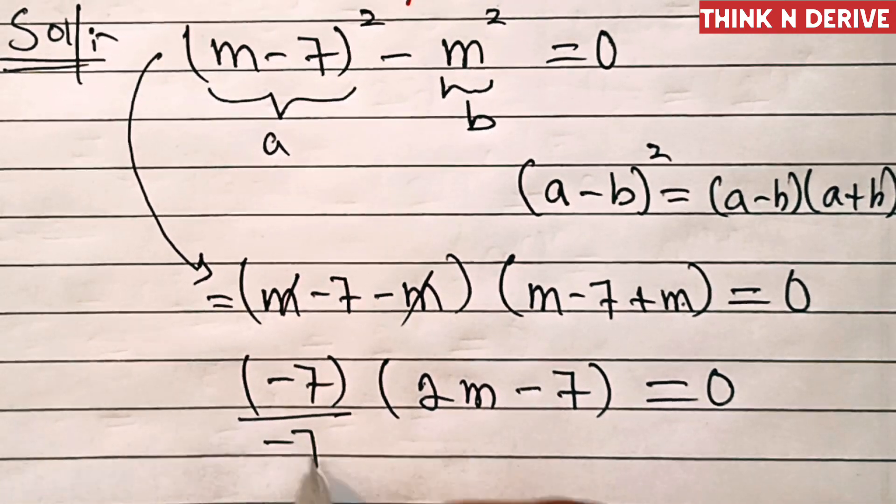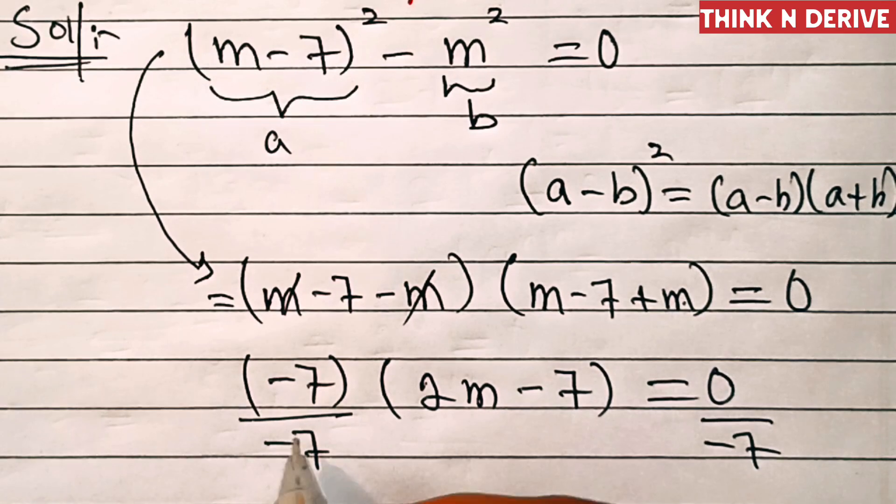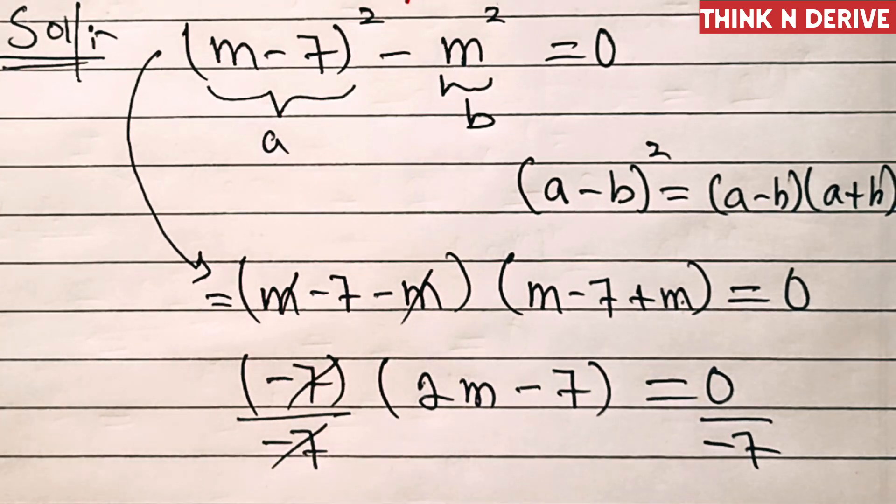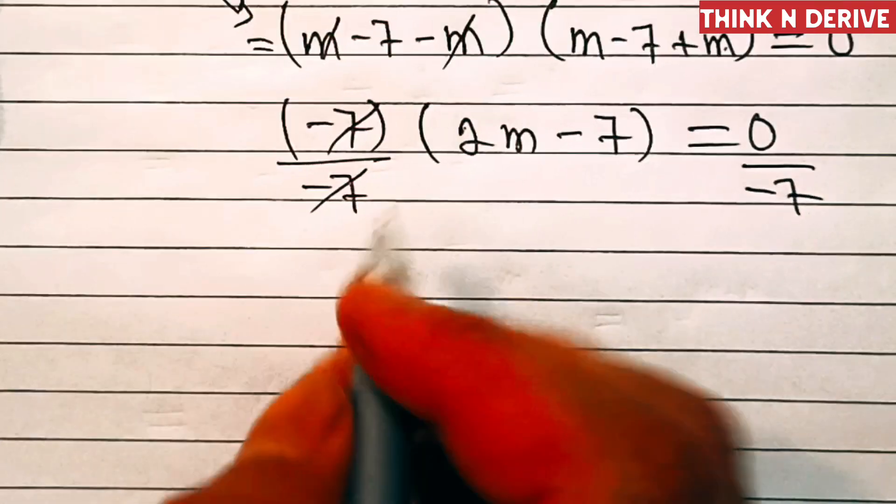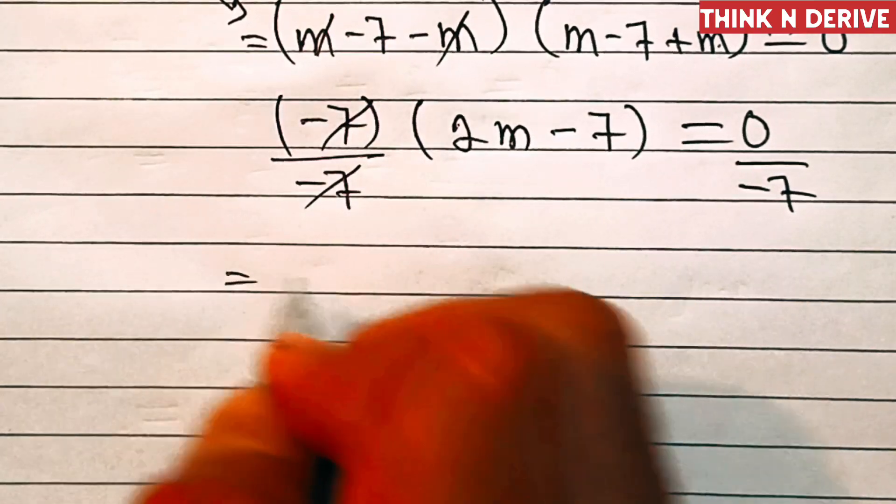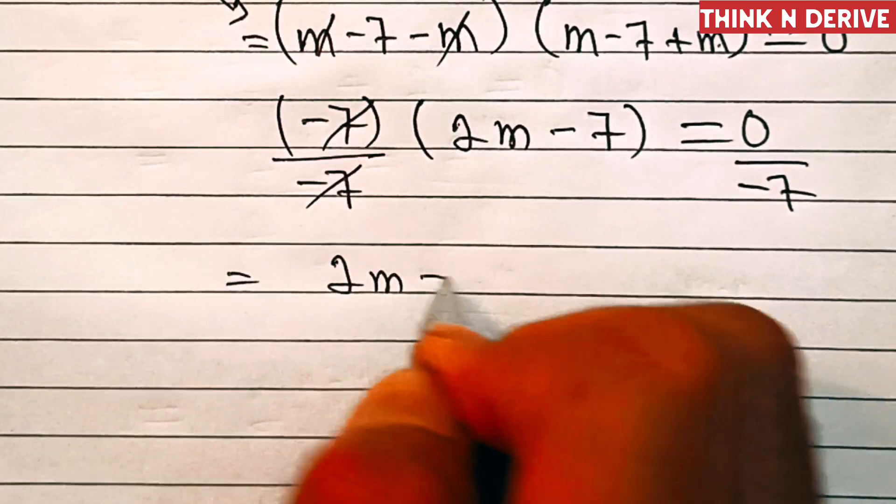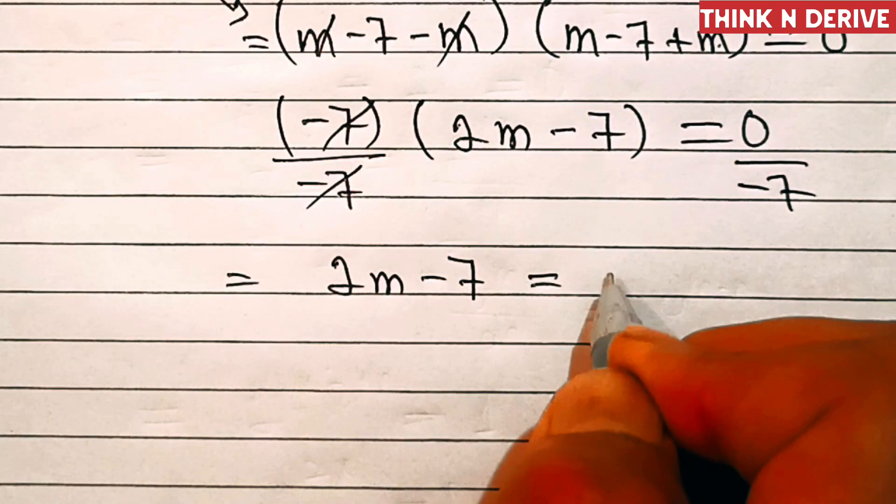Now divide both sides by minus 7. This will get cancelled out, so 2m minus 7 equals zero.